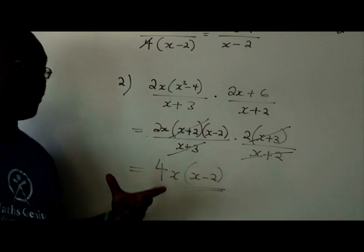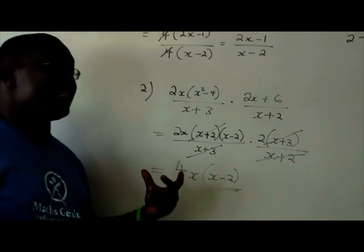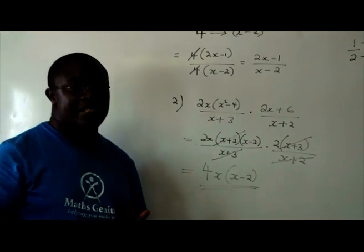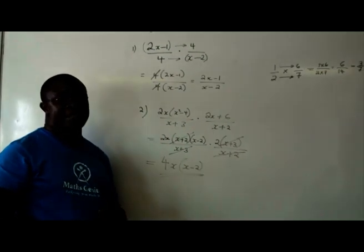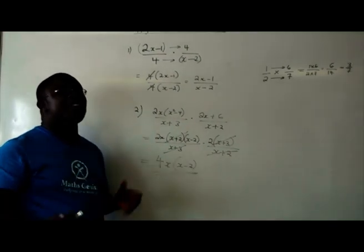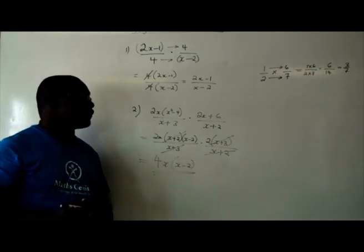So it's always important by inspection to see if there are any common factors that you can cancel out. Like the x plus 3 and x plus 3 right there. So that you simplify it to its simplest form.